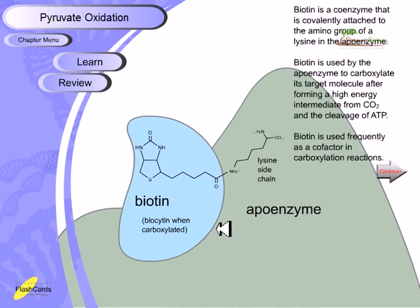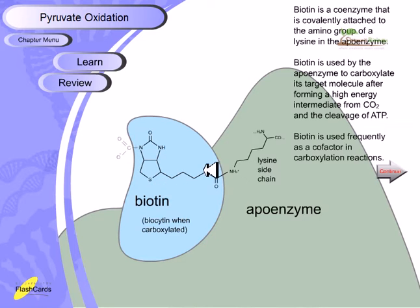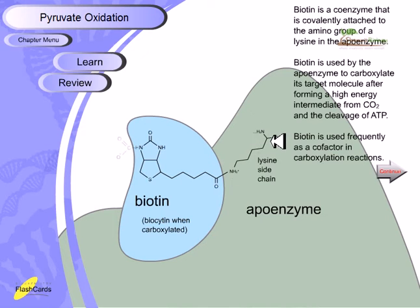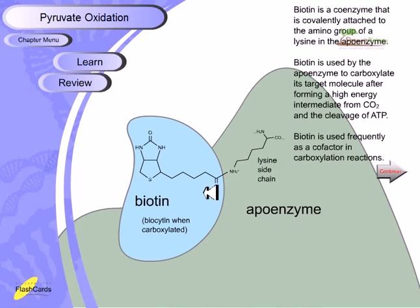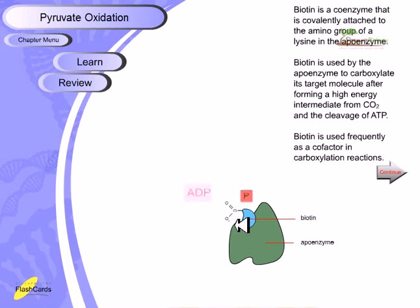Biotin is a coenzyme that is covalently attached to the amino group of a lysine residue of the apoenzyme. Biotin is used by the apoenzyme to carboxylate the target molecule after forming a high-energy intermediate from CO2 and the cleavage of ATP. Biotin holds the CO2 or HCO3− structure together. Biotin is frequently used as a cofactor in carboxylation reactions — if you think about different carboxylation reactions, most enzymes involved carry biotin because it is perfectly suited for this role.